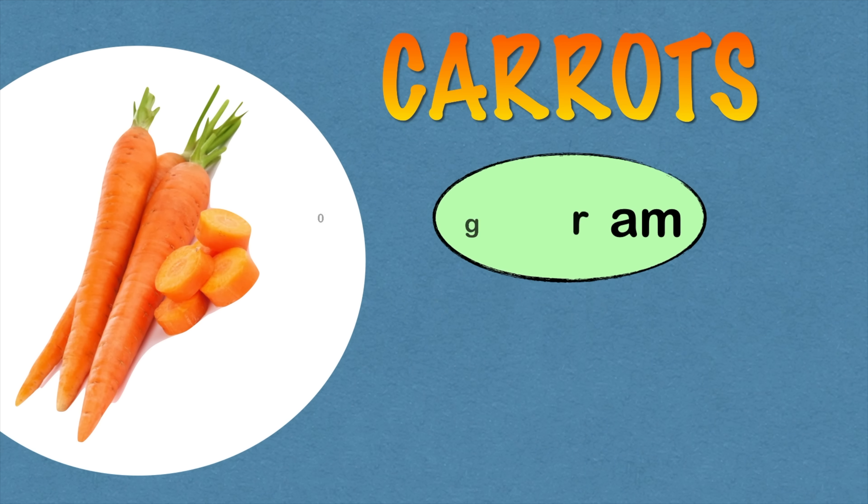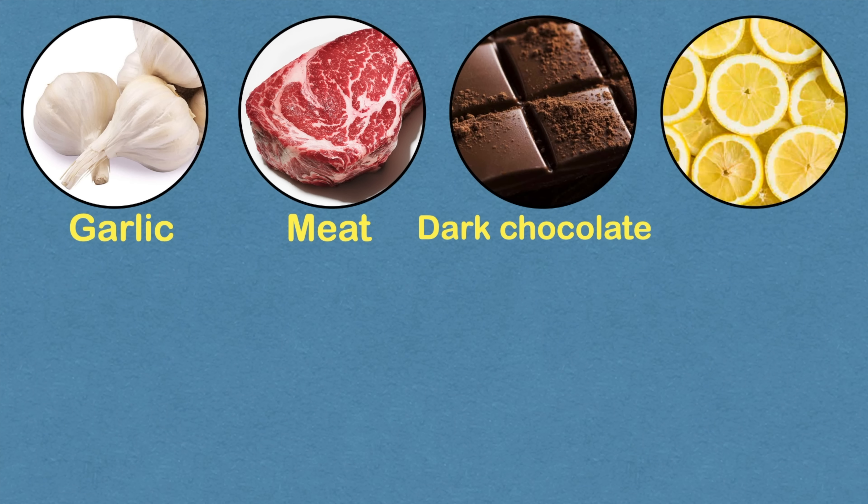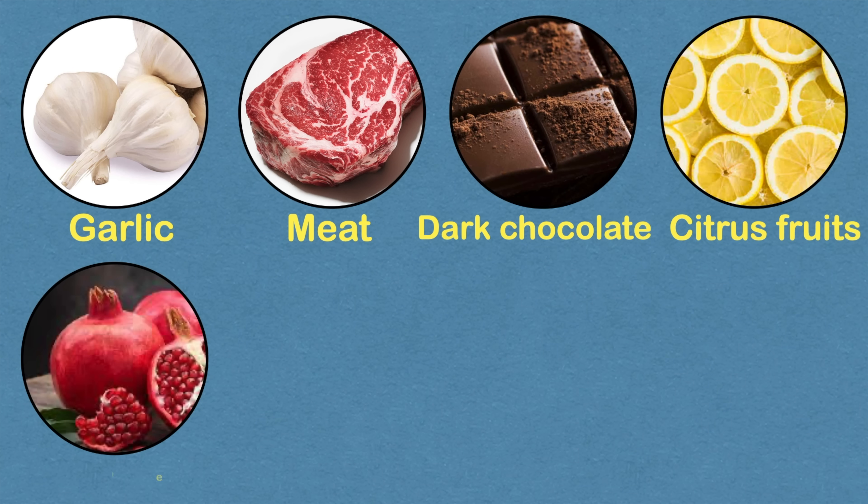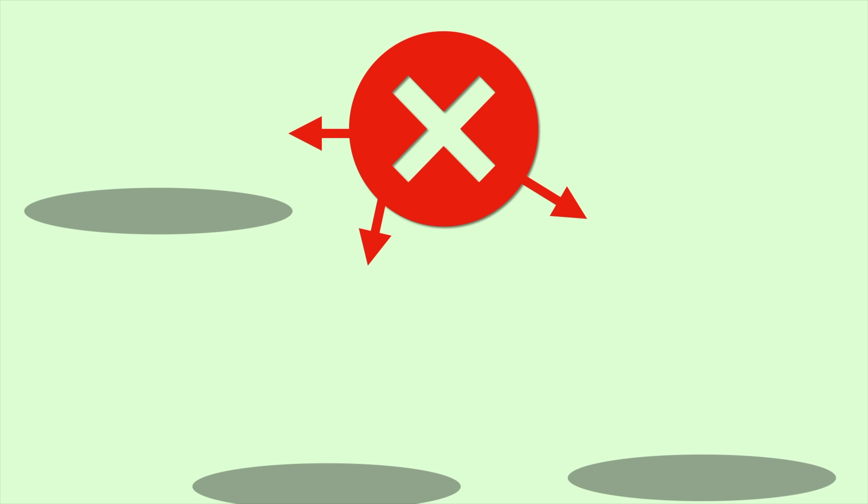Next are carrots. If you are looking for a slightly earthier alternative, then carrots contain anywhere from 92 to 195 mg of nitrates per 100 grams. Now the other foods that you can consider are garlic, meat, dark chocolate, citrus fruit, pomegranate, nuts, seeds and watermelon.